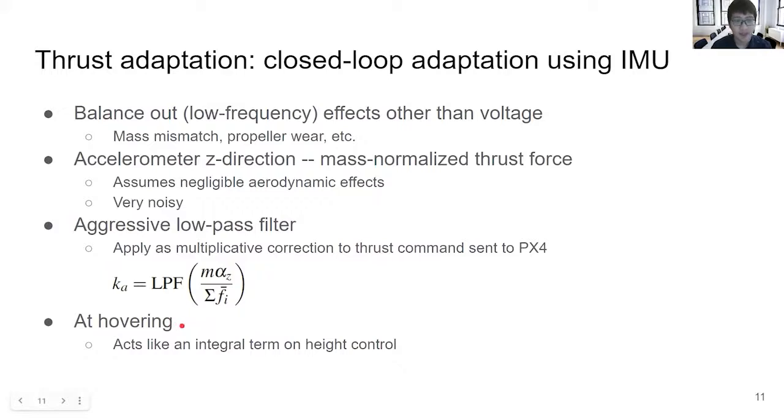We apply this as a multiplicative correction to the thrust command sent to PX4. At hovering, this adaptation behaves like an integral term on the height controller. In hovering, the vehicle's height error, because of model mismatch, will drop to near zero as we apply this adaptation for some time.